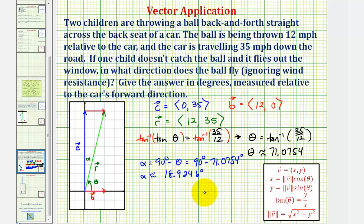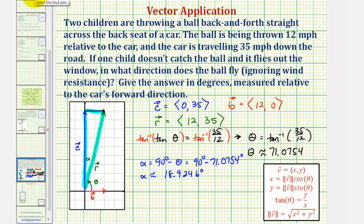But there's actually a much quicker, easier way to find alpha using this right triangle. We know the magnitude of vector c is 35, so we could label this 35. We know the magnitude of vector b is 12, so we could label this 12. Using this right triangle, we could say that tangent alpha equals the ratio of the opposite side to the adjacent side, or 12/35.